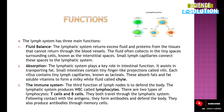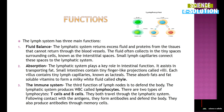The next important function is in the immune system — it helps to defend the body. The lymphatic system produces white blood cells called lymphocytes, which are of two types: T cells and B cells. They travel through the lymphatic system and, after contact with antigens, form antibodies to defend our body. They also produce antibodies through memory cells, meaning through previous attacks they form memory cells, and these memory cells also produce antibodies.